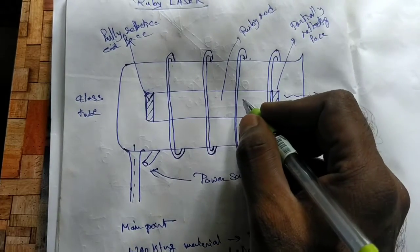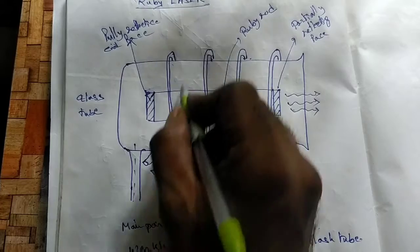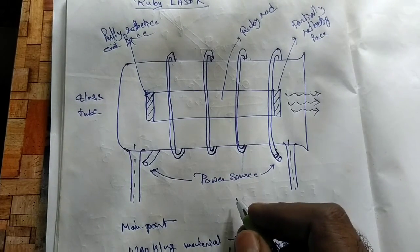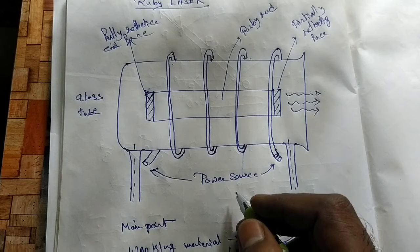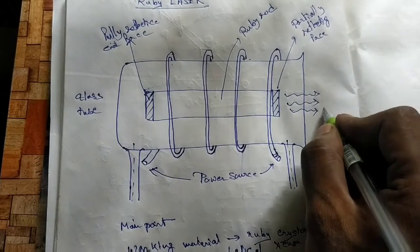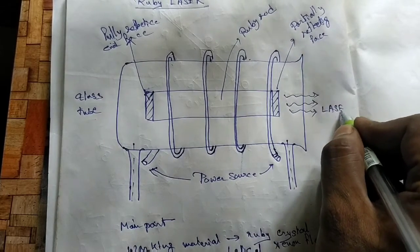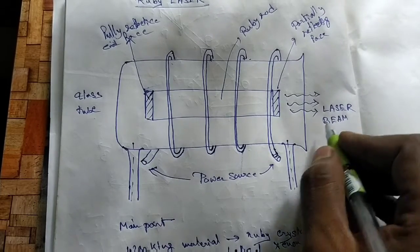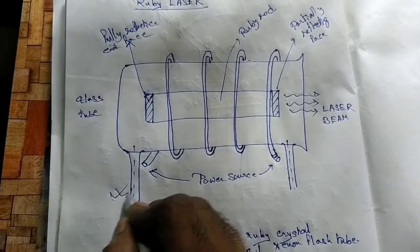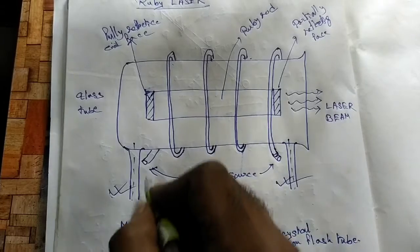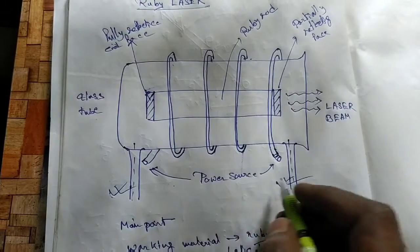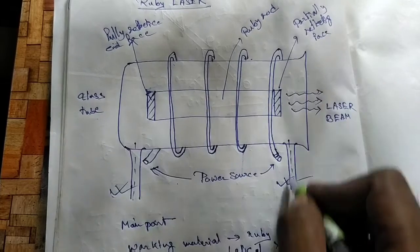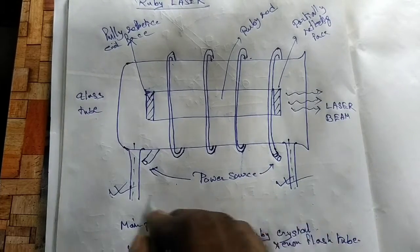What is ruby? I will explain. This spiral one is the power source. The emitting laser beam comes out from the partially reflecting end. The two inlet and outlet connections are for the cooling system — water is circulating in the whole system, in through one and out through the other. This is the cooling system.